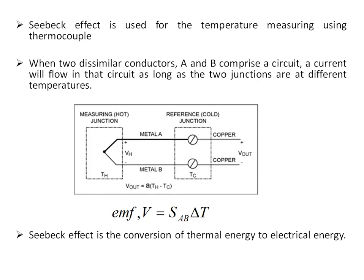The Seebeck effect is used for temperature measurement using the thermocouple, which is one of the commonly used devices. When two dissimilar conductors A and B form a circuit, a current will flow as long as the two junctions are at different temperatures. The EMF induced is directly proportional to the temperature difference, so by measuring the EMF, the temperature can be indirectly estimated. The Seebeck effect is essentially the conversion of thermal energy to electrical energy.